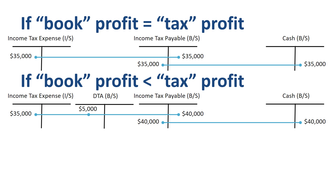Remember that deferred tax assets and deferred tax liabilities are for temporary timing differences. So when in a future period the income tax expense for book accounting is 40k and the income tax for tax purposes is 35k, this would be offset to the deferred tax asset account, and the resulting account balance is zero.